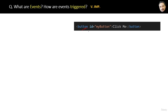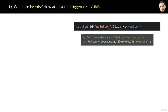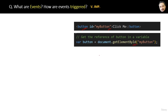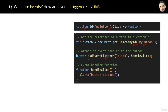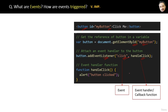Now let's see the actual code. Suppose we have a button on a web page and we want to show an alert message on the click of this button. First we get the reference of the button using getElementById, passing the id as the parameter. Then we attach an event handler — here 'click' is the event and handleClick is the event handler, which is also a callback function because it is passed as an argument to another function. Inside the function body we write the alert message.